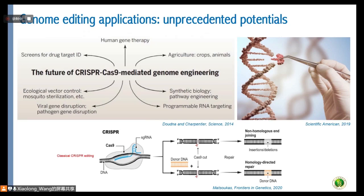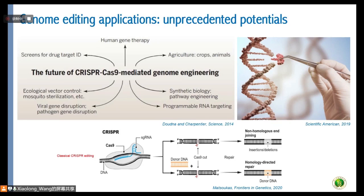CRISPR is actually straightforward. The Cas9 binds to genomic DNA and cuts it, guided by a guide RNA, introducing a double-stranded break. Afterward, it is repaired by two mechanisms: one is non-homologous end joining, which induces deletions, and another is homology-directed repair, which normally results in insertions.